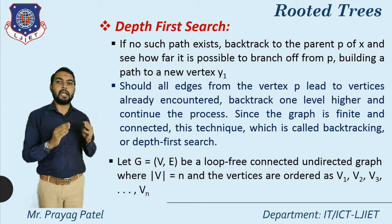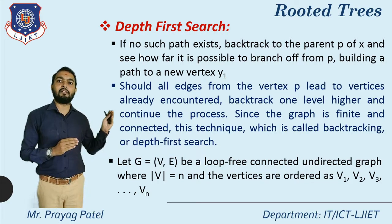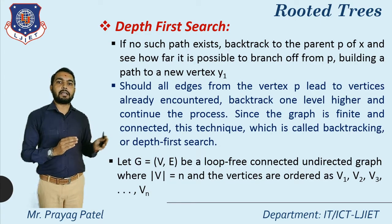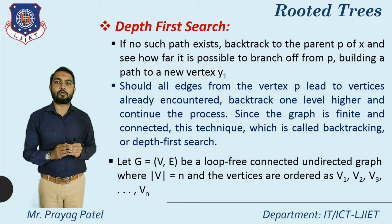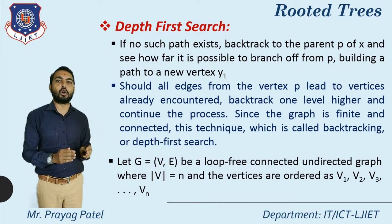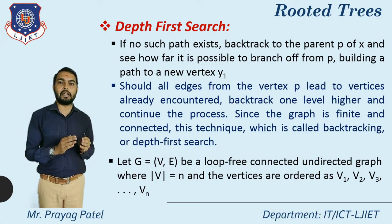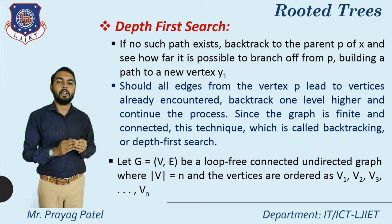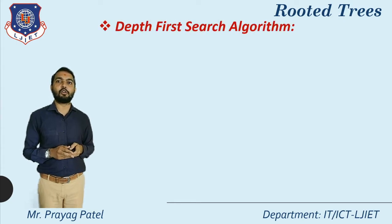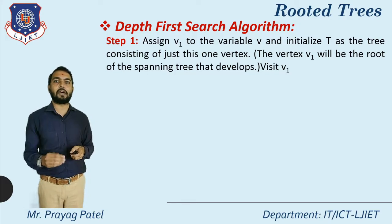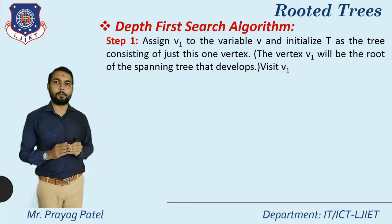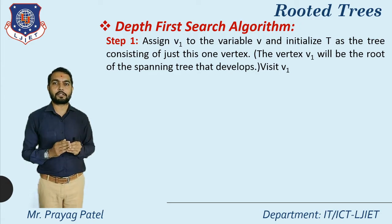In depth first search, let G equal to (V, E) be a loop-free connected undirected graph where the number of vertices equals n, and the vertices are ordered as v1, v2, v3, up to vn. In a rooted tree, if we want to find the depth first search sequence, one order is already given: v1, v2, v3, up to vn is the sequence for arriving at nodes. In DFS, we visit the root node, then any one child, then continue depth-wise until all nodes are visited.